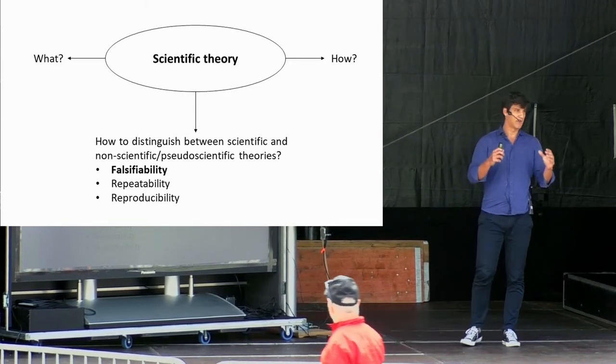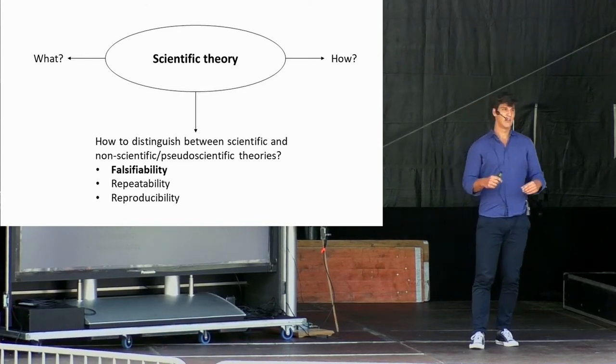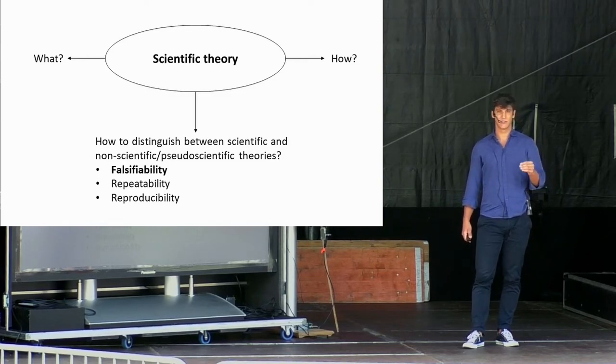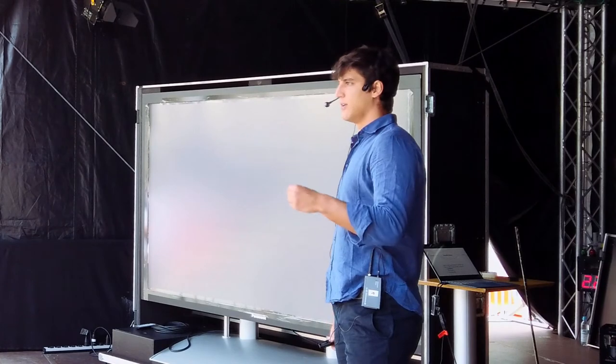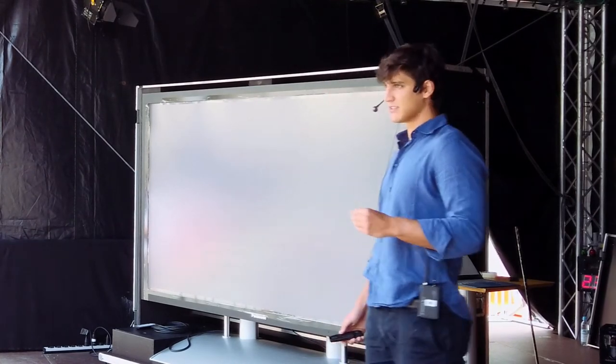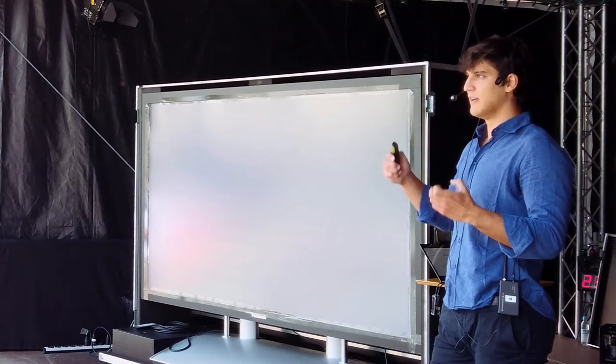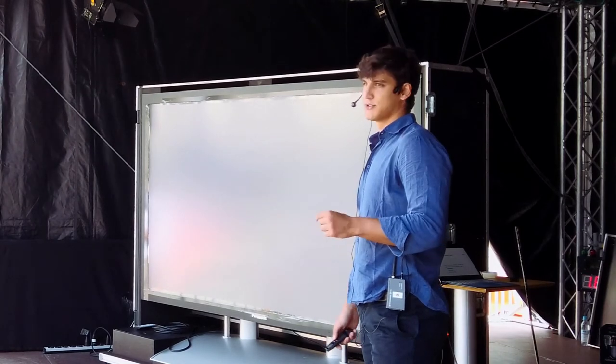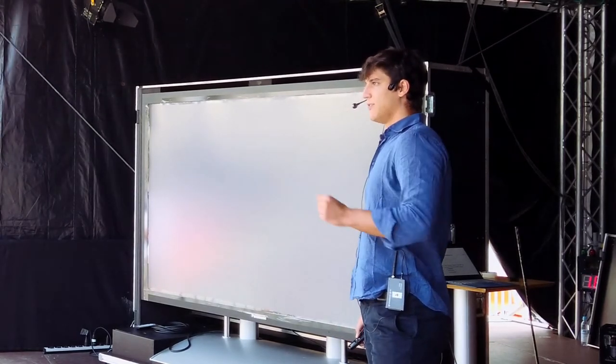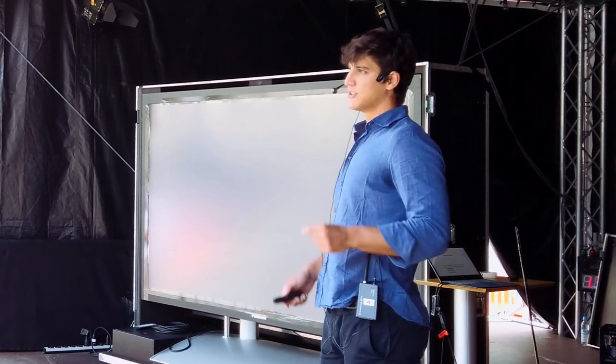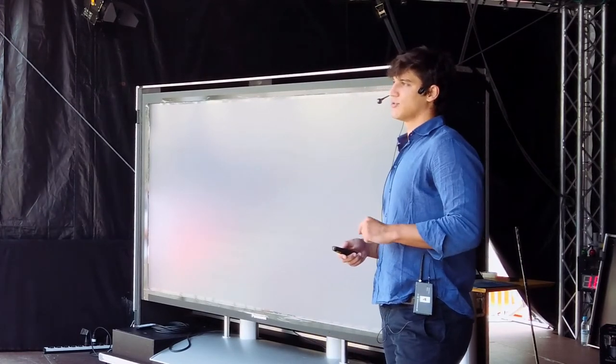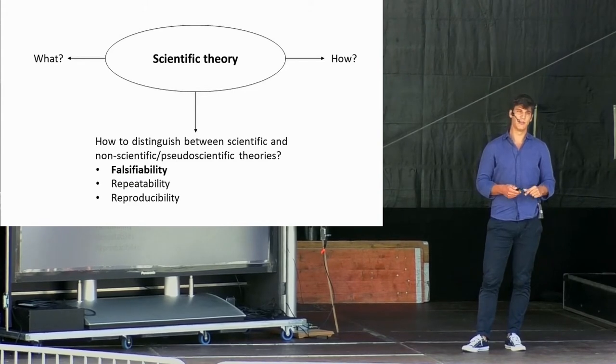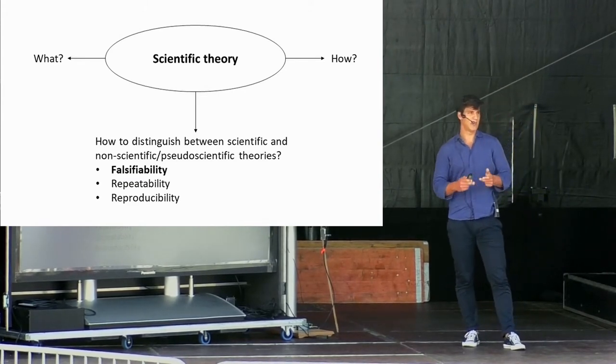But what makes the magnetic field theory scientific? The crucial feature of every scientific theory is that we must be able to test in the real world what the theory predicts is going to happen. This means that we must be able to have real observations and real experiments that prove and show what our theory wants to tell us. This feature is called testability, and it allows us to distinguish between theories that are scientific and theories that are non-scientific or pseudo-scientific. Today, I will focus on three different characteristics of a testable theory: falsifiability, repeatability, and reproducibility.